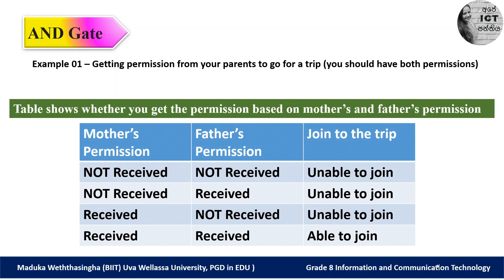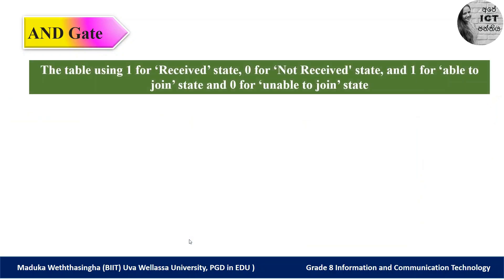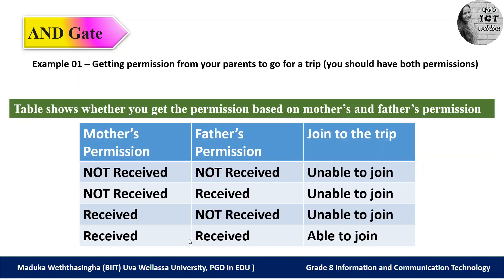Based on your mother's and father's permission, you can join the trip, but the condition is you must obtain both permissions. If your mother will not give permission and your father will not give permission, you cannot join the trip. If your mother doesn't give permission but your father does, you still can't go. If your mother gives permission but father doesn't, you also cannot go. Only when you have received both permissions are you able to join the trip.